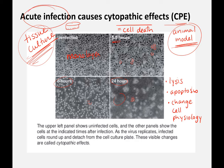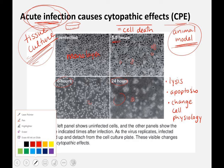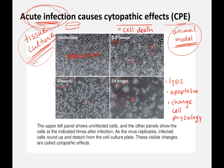In an acute infection, the end result is that we clear the virus infection. It's short-lived — your immune system responds and clears out the virus so you're no longer infected. You still get cytopathic effects because it takes some time for the immune system to respond.